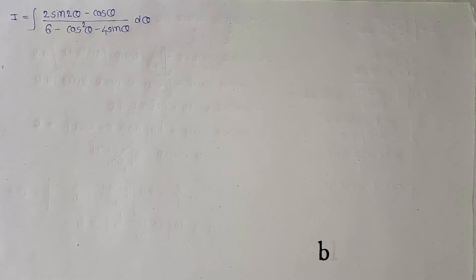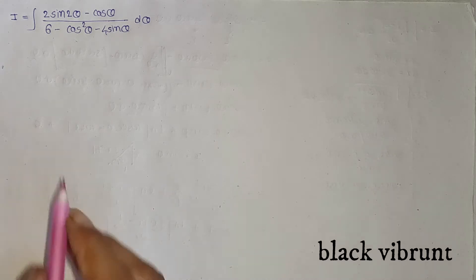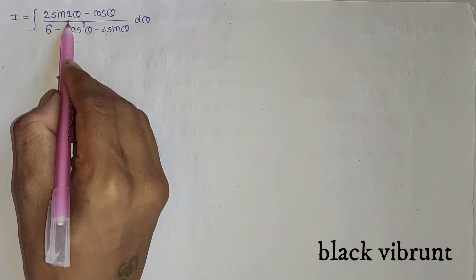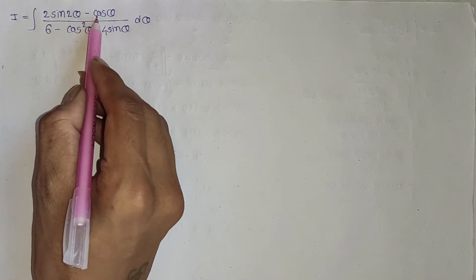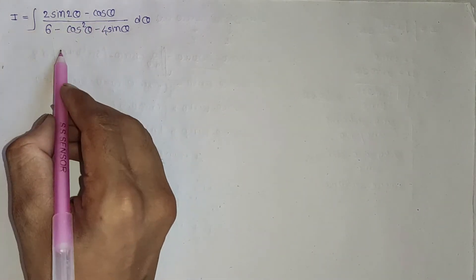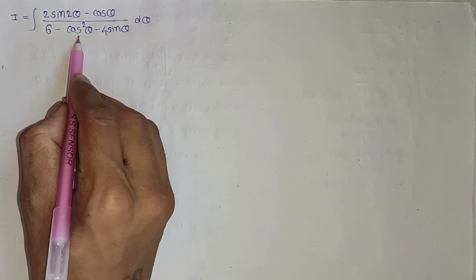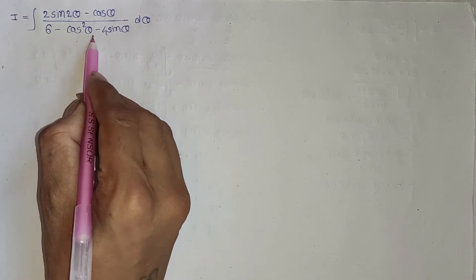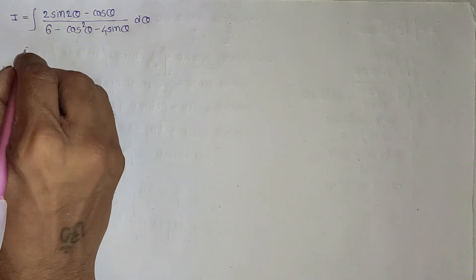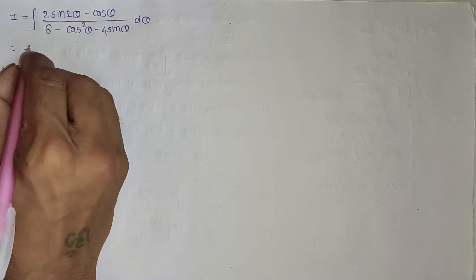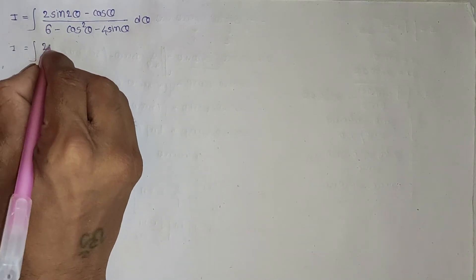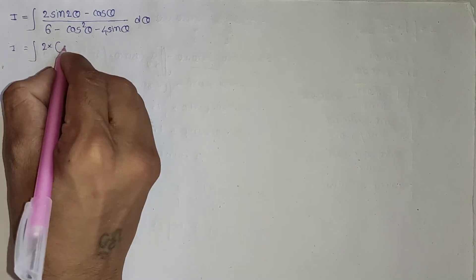Hello mathematicians. Start with a beautiful integration problem. I equal to integration of 2 times sine 2theta minus cos theta, divided by 6 minus cos squared theta minus 4 times sine theta.